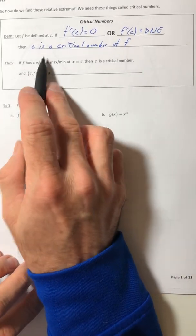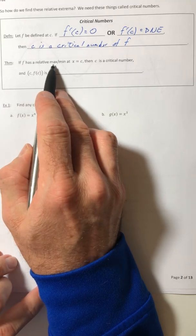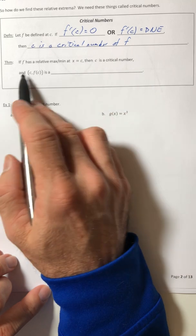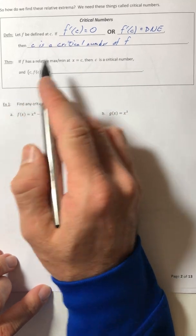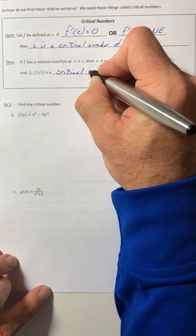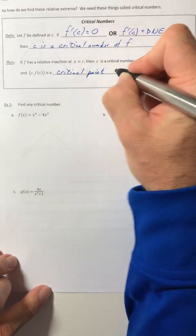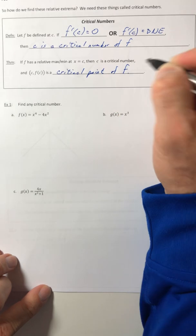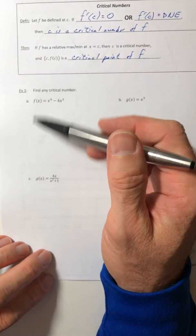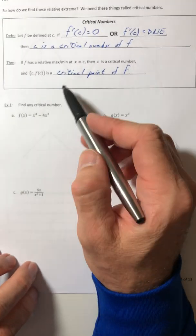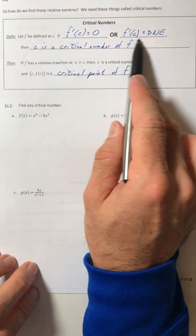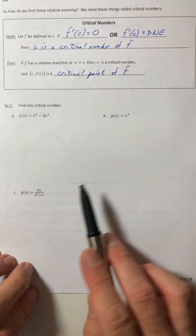So then the theorem that goes with that is that if F has a relative max or min at X equals C, then C is a critical number, and then C comma F of C is a critical point of F. Okay, so in the next example, I'm going to stop the video here. We'll do in the next video, but we'll actually do what this says. This is how you actually find out where your critical numbers are.